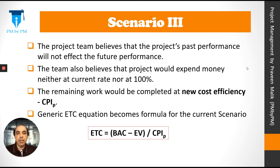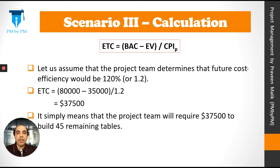Scenario 3: the project team believes past performance will not affect future performance, and the project will spend money neither at the current rate nor at 100% — something different. The remaining work would be completed at a new cost efficiency. For example, if the team has learned from the past and determines that future cost efficiency can be improved to 120%, or 1.2, then putting 1.2 in the formula gives ETC equals $37,500 — meaning the team will require $37,500 to build the remaining 45 tables.